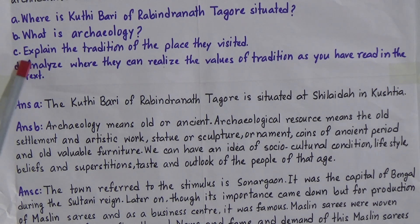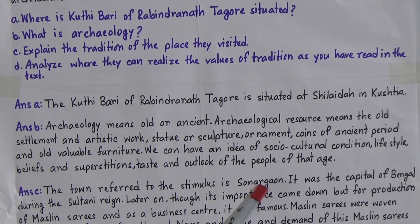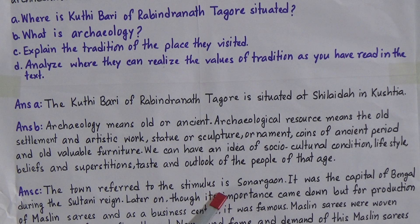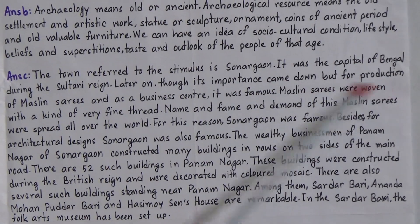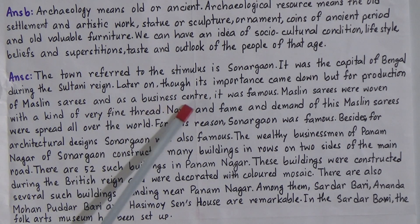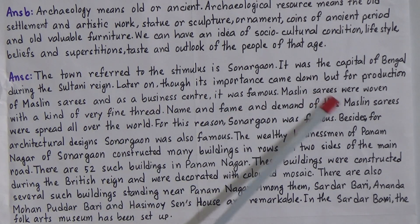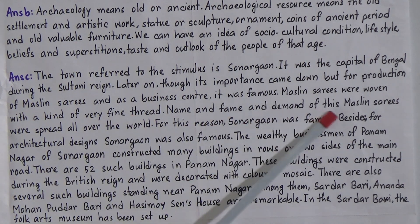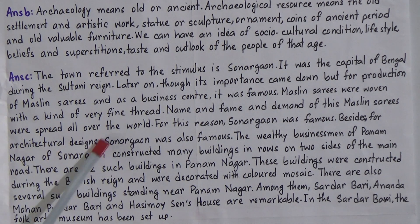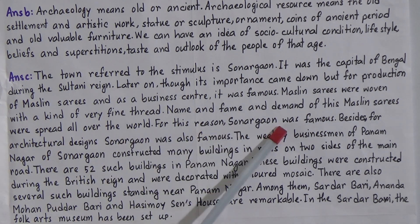Number C: Explain the tradition of the place they visited. The answer is: The place referred to in the stem is Sonargaon. It was the capital of Bengal during the Sultani reign. Later on, though its importance came down, it remained famous for the production of muslin saris and as a business center. Muslin saris were woven with a very fine thread, and their name, fame, and demand spread all over the world. For this reason, Sonargaon was famous.